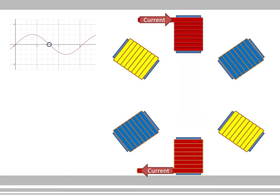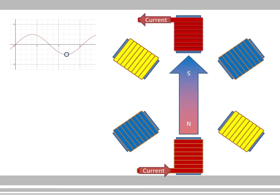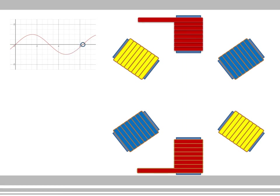As the current drops off in the sine wave, when we reach zero the magnetic field disappears. Then we cross the x-axis and the current becomes negative — the negative half cycle. Now current changes direction, going in the bottom coil up through the top coil, and the magnetic field reverses: the north pole is now at the bottom and south pole at the top. When the current drops back to zero, the magnetic field disappears again.